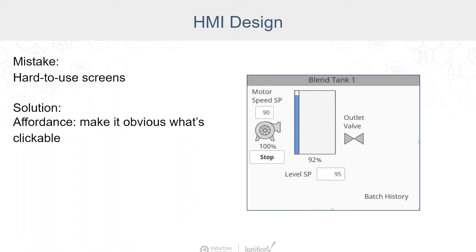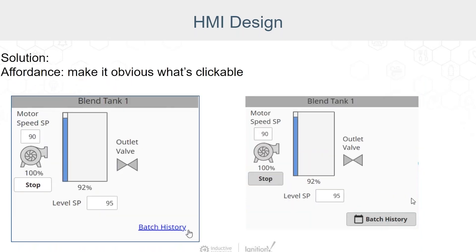Let's move on from menu navigation and talk about buttons or navigation on views. Users will interact with the HMI primarily by clicking, so make it clear what is clickable. Avoid custom buttons that don't look like buttons or clickable components. In this example, we have a clickable label for batch history in the lower right corner, but it's not very obvious that you might want to click that label. Here are two better examples: batch history highlighted and underlined like a classic HTML link, or as an obviously clickable button consistent with the stop button.